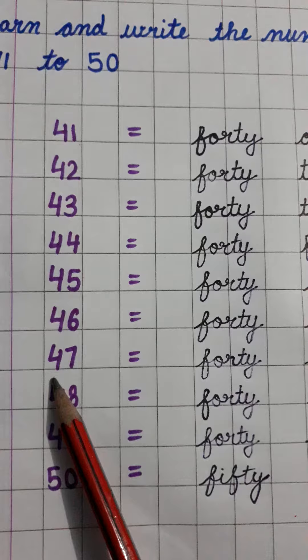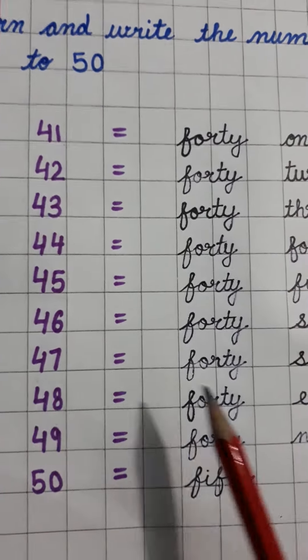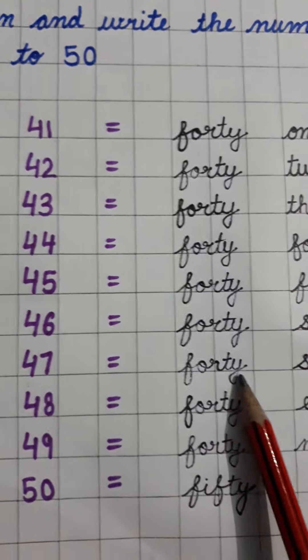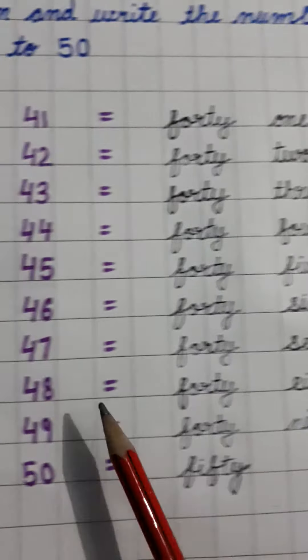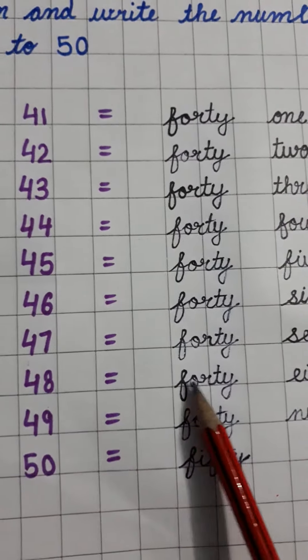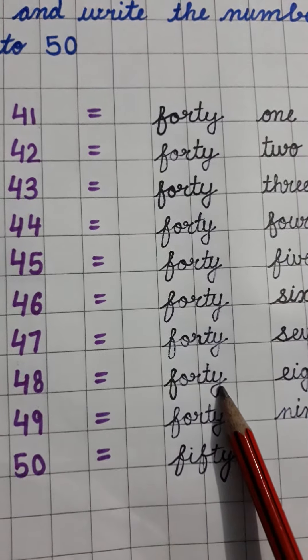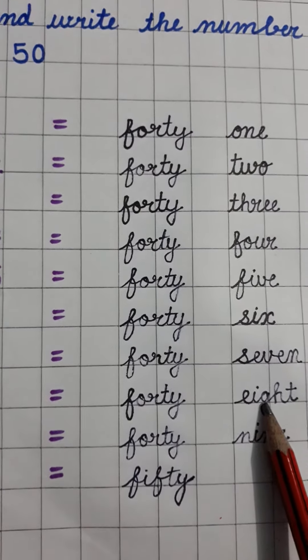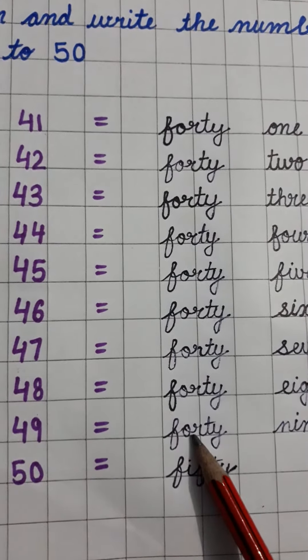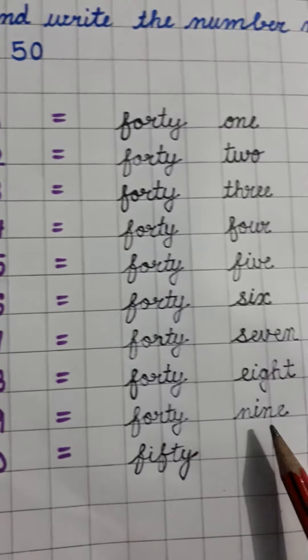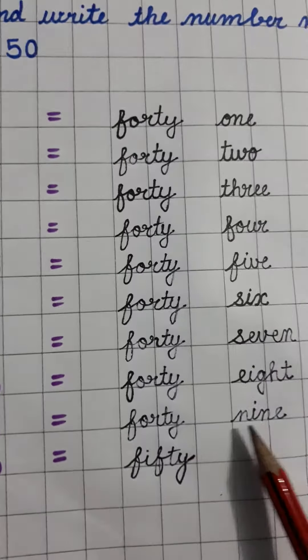Next is 47: F-O-R-T-Y, forty, S-E-V-E-N, seven. 48: F-O-R-T-Y, forty, E-I-G-H-T, eight. 49: F-O-R-T-Y, forty, N-I-N-E, nine.